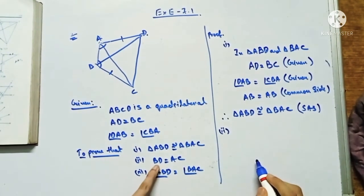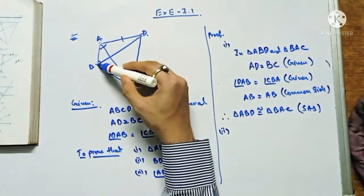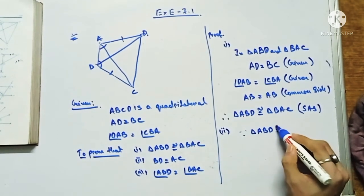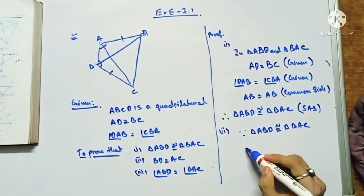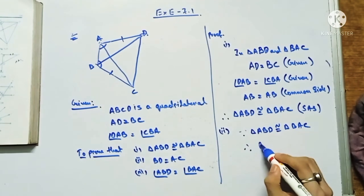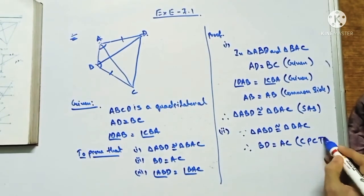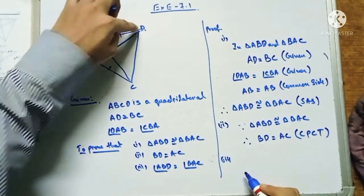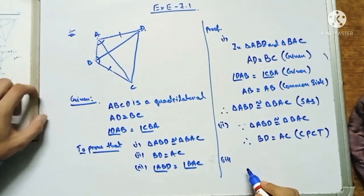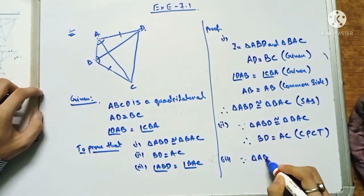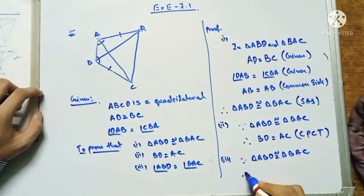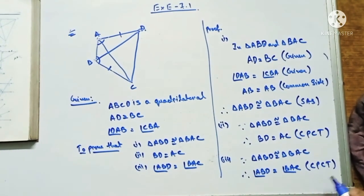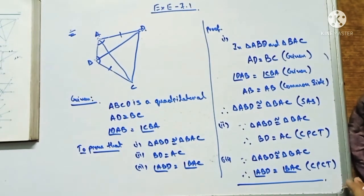For part two: since triangle ABD is congruent to triangle BAC, therefore BD equals AC by CPCT. For part three: since triangle ABD is congruent to triangle BAC, therefore angle ABD equals angle BAC, again by CPCT. This completes the proof for question number two.